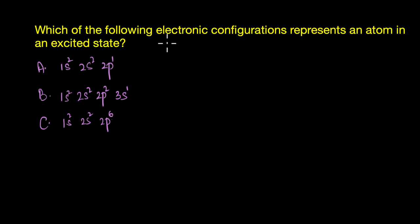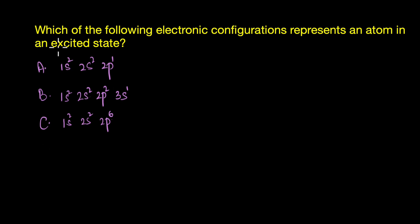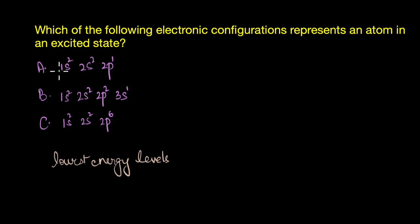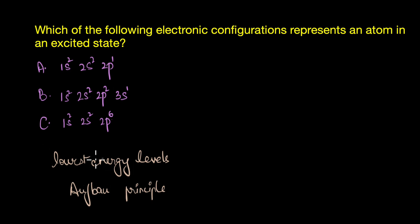The second question asks: which of the following electronic configurations represents an atom in an excited state? The options are: 1s2 2s2 2p1; 1s2 2s2 2p2 3s1; and 1s2 2s2 2p6. The ground state is where all electrons occupy the lowest possible energy levels, filling lower levels before higher ones — this is based on the Aufbau principle.